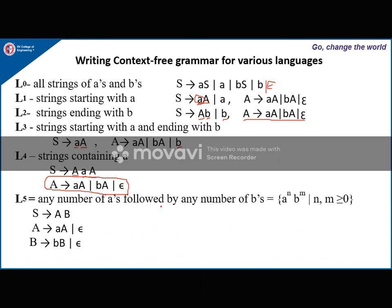Next: any number of A's followed by any number of B's. Here S derives AB, A derives aA | epsilon to generate any number of A's, and B derives bB | epsilon to generate any number of B's. We will stop here and continue the remaining examples in the next video. Thank you.